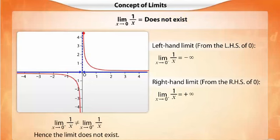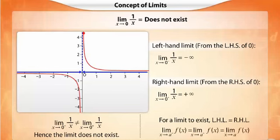We say that the limit of a function F of X as X tends to A exists only if the left-hand limit is equal to the right-hand limit. This equal value gives the limit of the function.